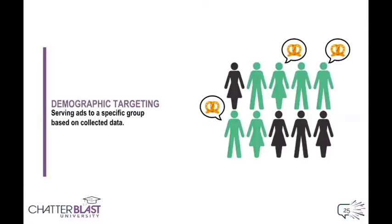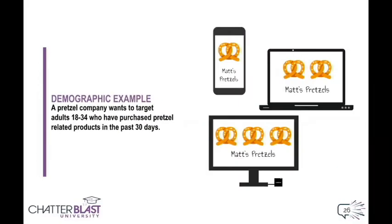Let's start with the most basic form: demographic targeting. Simply pick things like gender, age, and specifics like household income to set up your campaign. For example, if a pretzel company wanted to grow sales with adults 18 to 34, they can simply set up a campaign for adults 18 to 34 who have purchased pretzel-related products in the past 30 days.